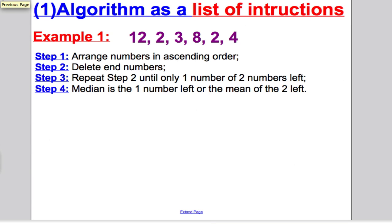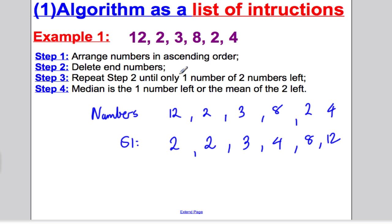Next, let's talk about there are two ways that we have to know how to write an algorithm. The first way is just writing a set of instructions, rather like a recipe, telling someone what to do in what order with a set of words. The next way is by use of a flowchart. So I'm going to show you examples of each. First one, algorithm as a list of instructions. Let's have a go at this algorithm here. You've got some numbers, and step one is to arrange the numbers in ascending order. So I'm going to list my numbers: 12, 2, 3, 8, 2, and 4.